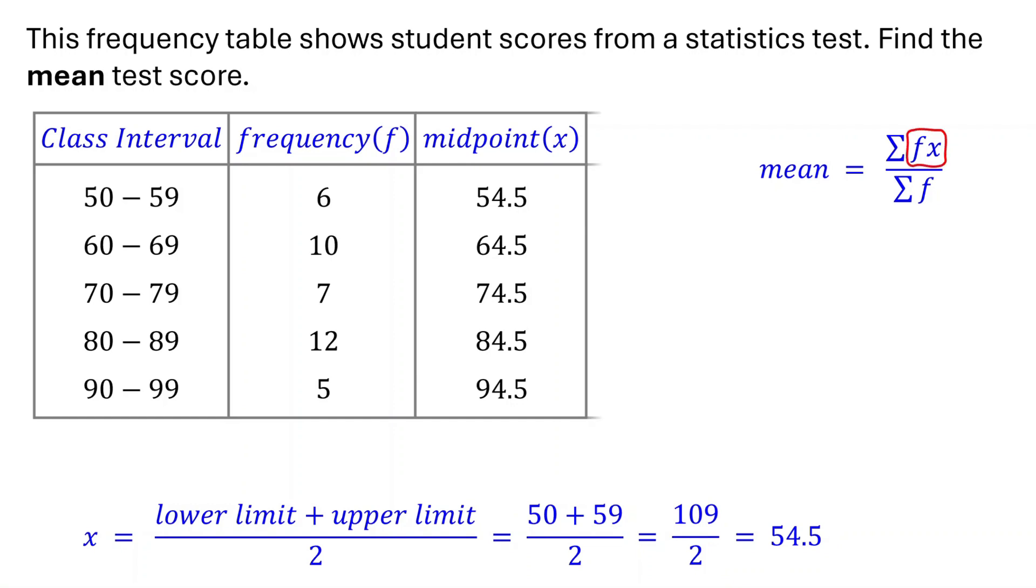Next, multiply each midpoint by the corresponding frequency. For the first class, 6 times 54.5 equals 327. For the second class, 10 times 64.5 equals 645. Do the same for the remaining classes.